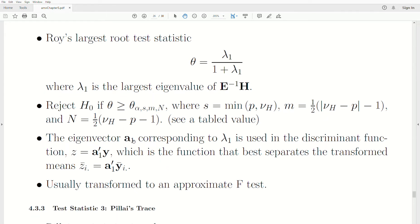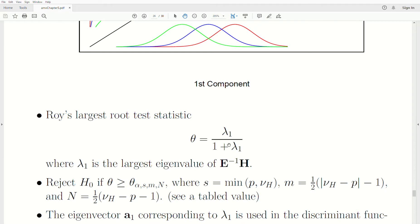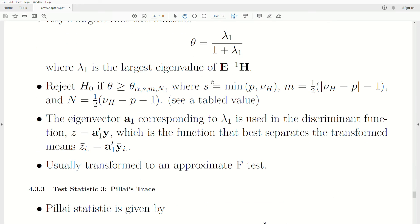Now, the eigenvector is called A1 corresponding to the eigenvalue Lambda 1, is what's called the discriminant function. And so if we transform our data by using this vector product, A1 transpose into a new Z, this is the function that best separates the transformed means. And so this linear combination, what we call the discriminant function, which we'll actually delve into, I think, next chapter. That's really what's going on here. And then it ends up being equal to this. And so, but it's a complicated distribution and it's usually transformed into an approximate F test.